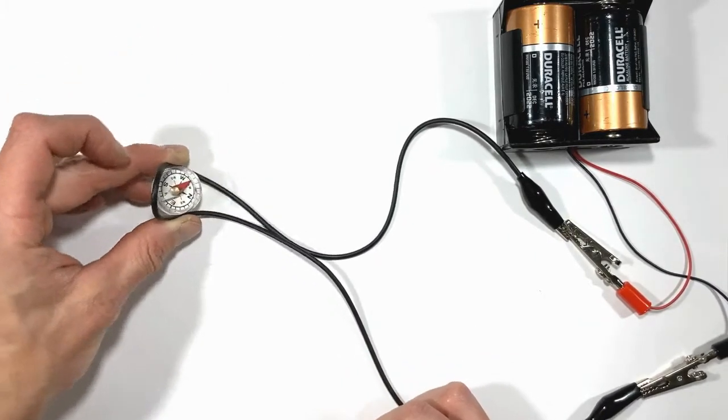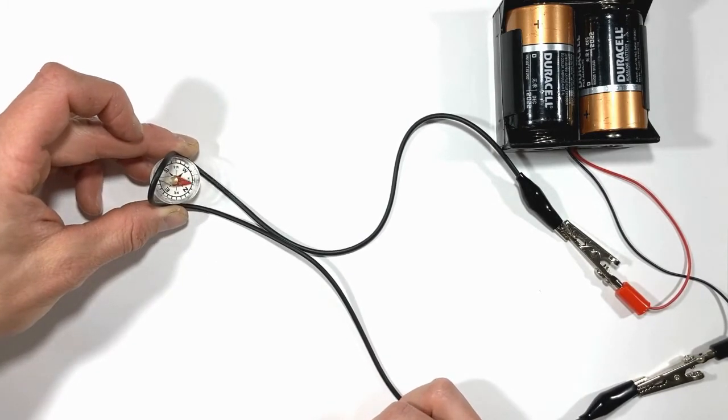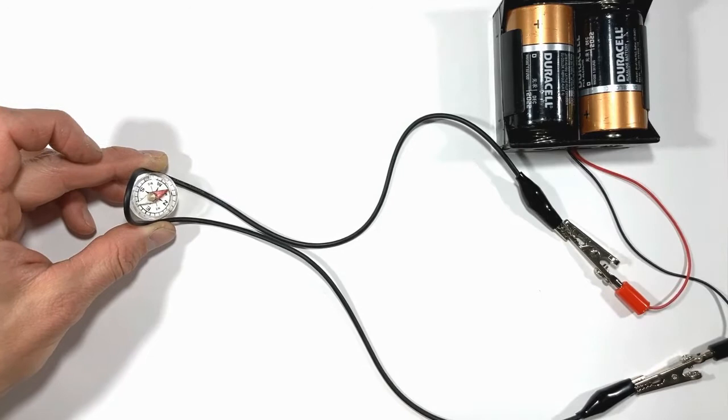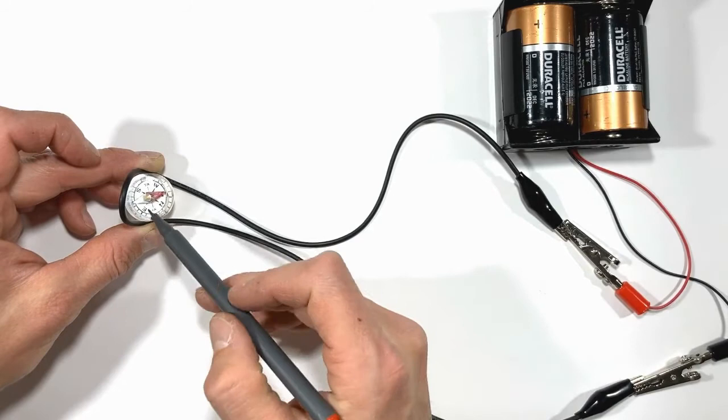No matter how I turn this wire, the compass is always going to align with the wire. So to better understand what's going on here, let's take a look at a diagram showing the direction of the magnetic field which is produced around this current carrying wire.